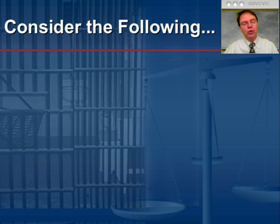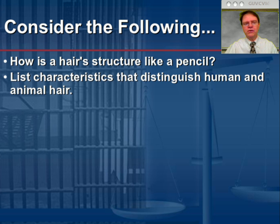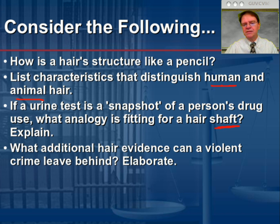In our 'consider the following' segment, here are four questions. First, how is hair structure like a pencil? Make a sketch and compare the two. Second, list as many characteristics as you can to distinguish human and animal hair. Third, if a urine test or blood test is a snapshot of a person's drug use, what analogy is fitting for a hair shaft — and explain it. And fourth, what additional hair evidence can a violent crime leave behind, and what additional information can the crime scene provide?